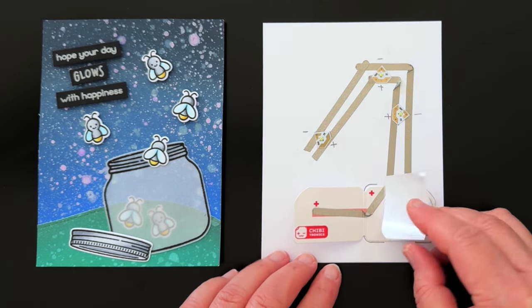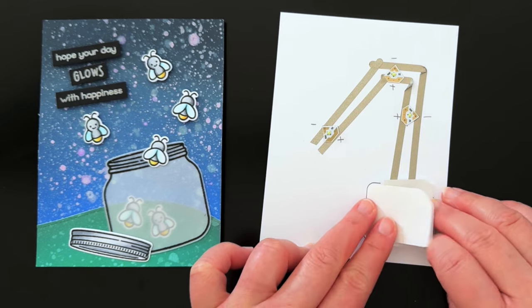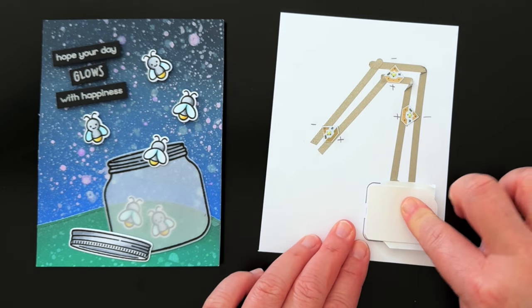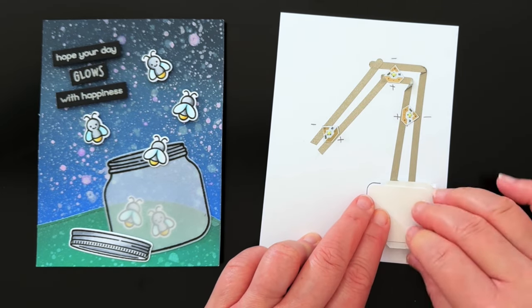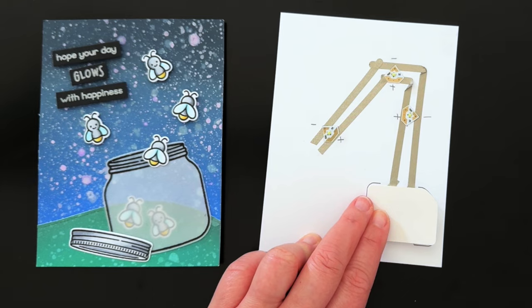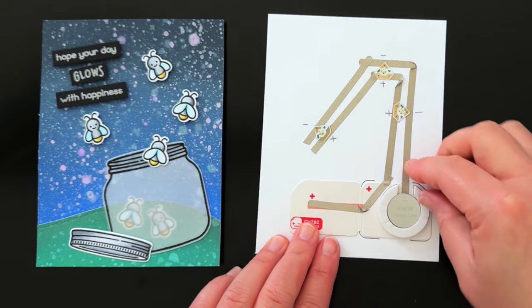If you want, you can slide a strip of cardstock between the top of the battery and the flap for mailing if you really want to make sure that the LEDs aren't lighting up in the mail. When your recipient receives the card, they'll simply slide out that strip of cardstock.